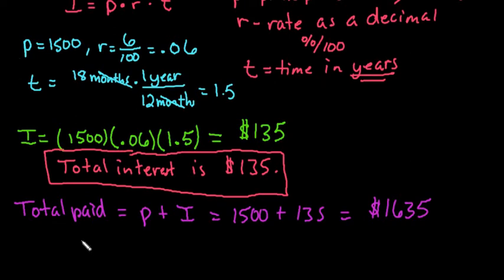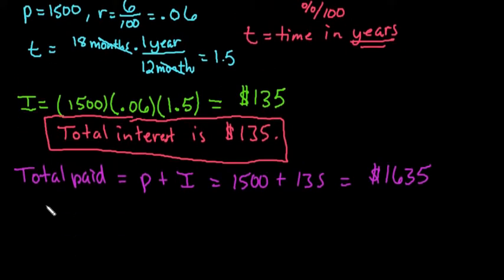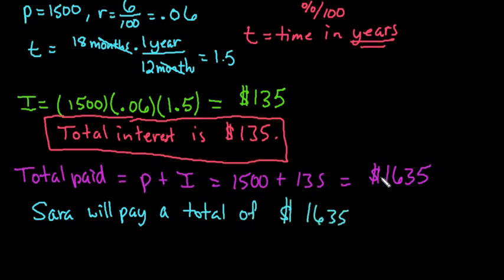It's always best to write this as a sentence. We can say that Sarah will pay a total of $1,635 for the loan.